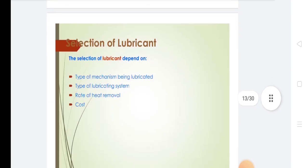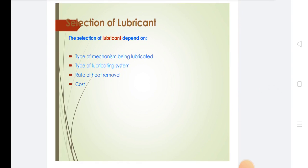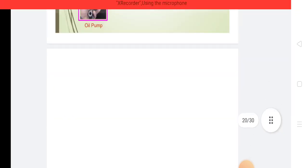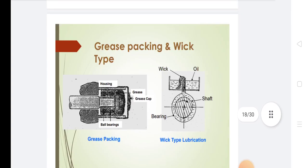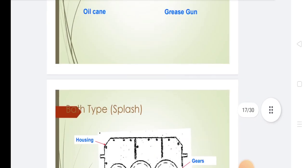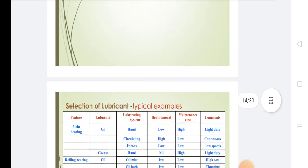In selection of lubricant, the choice depends on the type of mechanism being lubricated, type of lubricating system, rate of heat removal, and cost. These are the properties of the lubrication materials and their diagrams.